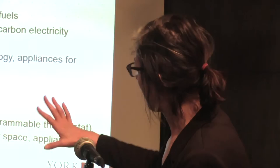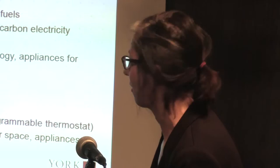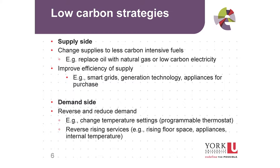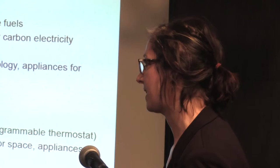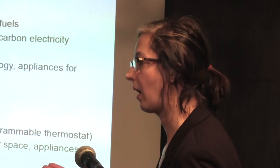On the supply side, issues around decarbonization include fuel switching and improving efficiencies of supply. On the demand side, we also have an issue around rising energy services — that's a trend we need to look at reversing. For example, data shows rising floor space per capita, rising numbers of appliances in households, and the rebound effect: you replace your furnace and then increase the internal temperature. If per capita floor space is increasing, this is one reason we have growing demand despite increasing energy efficiency.